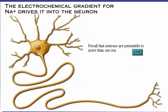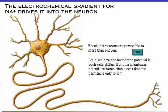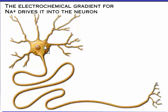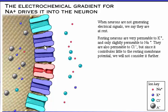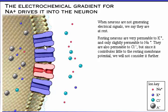Recall that neurons are permeable to more than one ion. Let's see how the membrane potential in such cells differs from the membrane potential in simple cells that are permeable only to potassium. When neurons are not generating electrical signals, we say they are at rest. Resting neurons are very permeable to potassium and only slightly permeable to sodium. They are also permeable to chloride, but since it contributes little to the resting membrane potential, we will not consider it further.